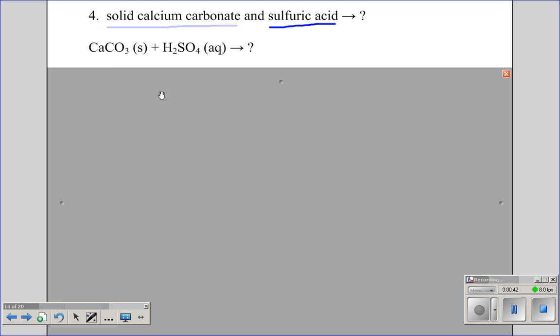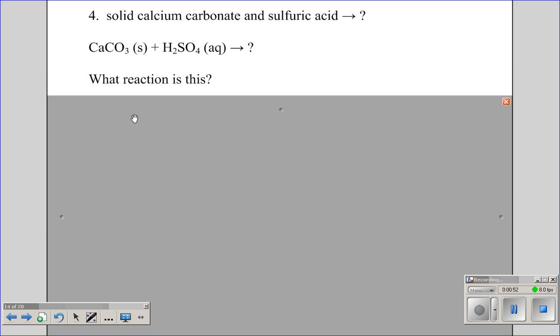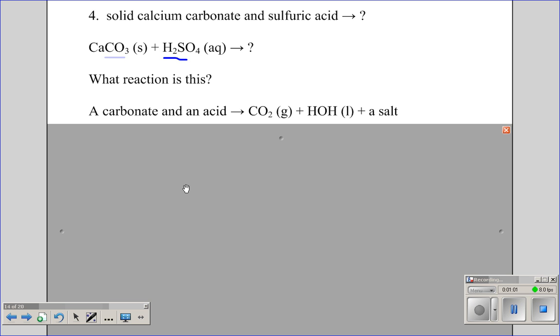So, calcium carbonate and sulfuric acid, which would be aqueous, turn into what? What kind of reaction is this? We have a carbonate and an acid. So, a carbonate plus an acid turns into carbon dioxide gas plus water plus a salt. The salt would be the combination of leftovers, calcium and sulfate.